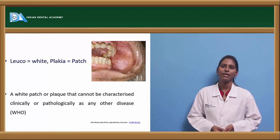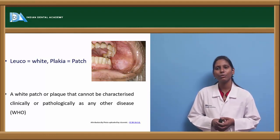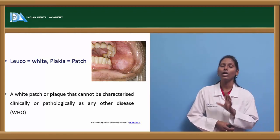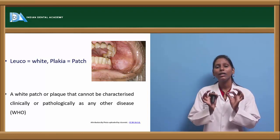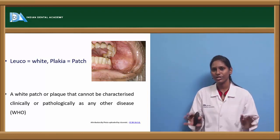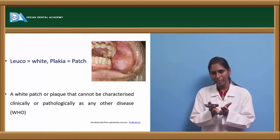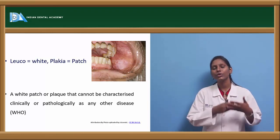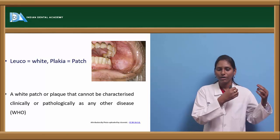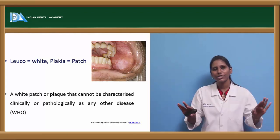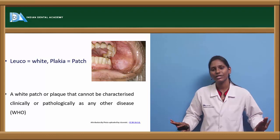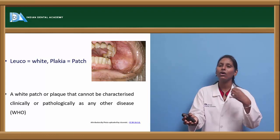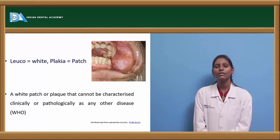It is a white patch. WHO has classified this white patch or plaque which cannot be characterized as any other white lesion either clinically or pathologically. That clearly means leukoplakia is a diagnosis of exclusion. Whenever we see a lesion which is a white patch and it is not leukoedema or any other white lesion — we have excluded all the different white lesions — then our final conclusion is leukoplakia.